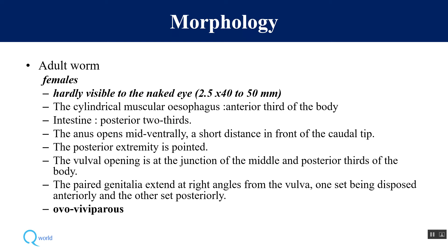Its morphology includes adult worms, eggs, and larval forms. The sexes are separate — both male and female worms are seen but are hardly visible to the naked eye, being very small. They have a cylindrical muscular esophagus comprising an entire third of the body, and the posterior third of the body contains the intestine.